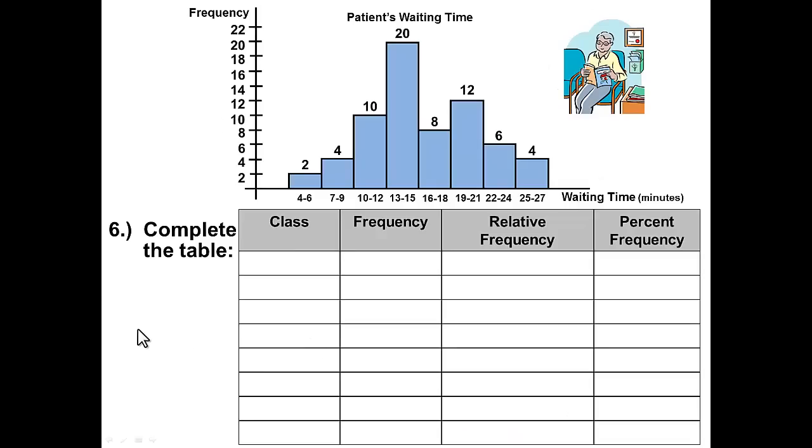We can also complete a table with the class, frequency, and relative frequency, and percent frequency from the histogram. The classes are filled from the horizontal axis, and I'm not going to sit here and read those for you. It will just be the 4 to 6, 7 to 9, all the way up to the 25 to 27. The frequency will be the height of each of the bars. So we can fill those in as well.